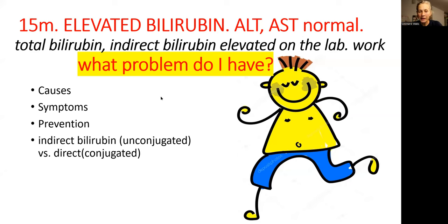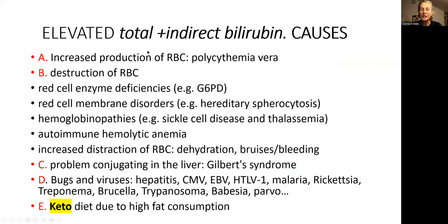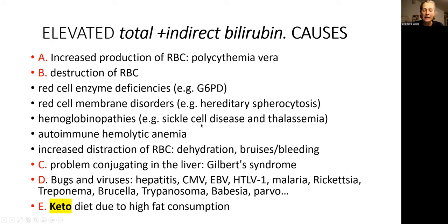Here I put for you a list of possible diseases that may increase indirect bilirubin, from the more dangerous one to kind of a light one. A, polycythemia vera is basically cancer of red blood cells. B is increased destruction of red blood cells — RBC. Red blood cells would have a deficiency of enzymes such as glucose-6-phosphate dehydrogenase and they are very unstable. Also, spherocytes are not very stable, sickle cells are not stable.